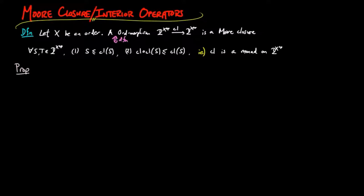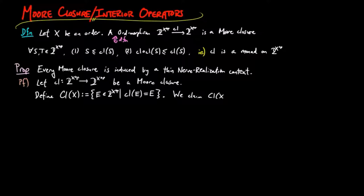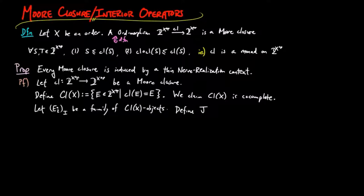We have the following proposition: every Moore closure is induced by a thin nerve-realization context. For the proof, let Cl be a Moore closure. Define the set of closed sets in x as the set of downward closed subsets such that the closure of e is equal to e. We claim this set with the induced order is co-complete — in other words, has all joins. Let e_i be a family of closed objects. Define the join of e_i to be the closure of the join of e_i, where the join is taken in the order of downward closed subsets of x.